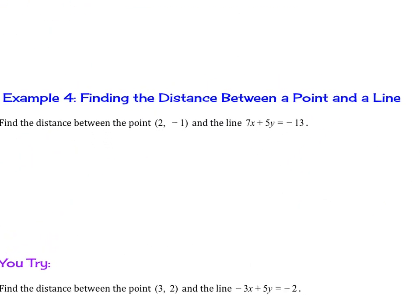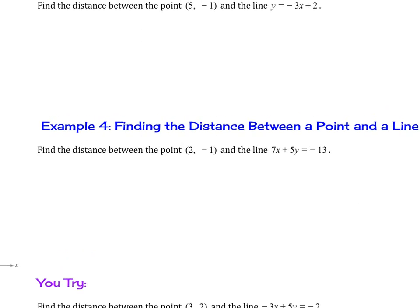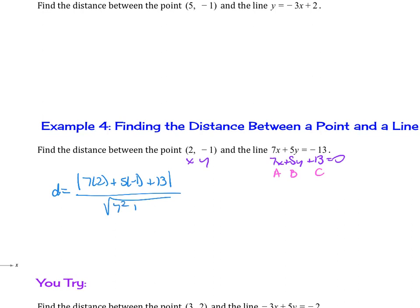Here's a second example of finding distance between a point and a line. Set the equation equal to 0 to identify a, b, and c, and plug into the formula. Distance equals absolute value of (7 times 2 plus 5 times negative 1 plus 13), over the square root of (7 squared plus 5 squared). That gives 14 minus 5 plus 13 over the square root of 49 plus 25, which equals 22 over square root of 74, or approximately 2.56 units.